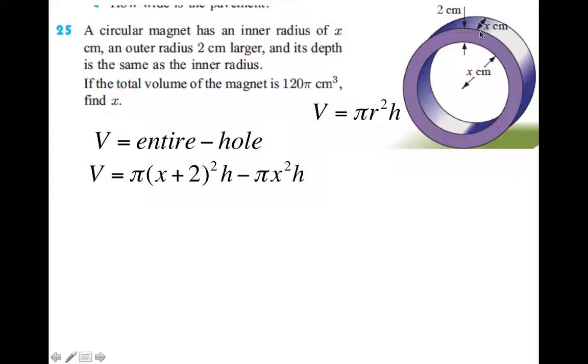And then we subtract away this hole, because we're getting the volume just of the magnet. So the hole is πr², πr² is just this, and then times h gives us the same height.